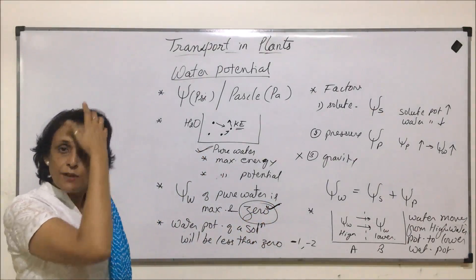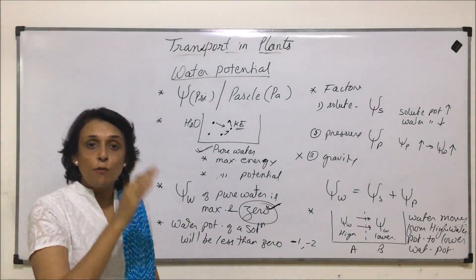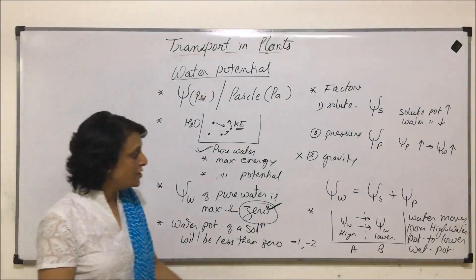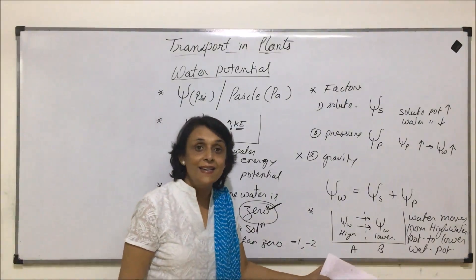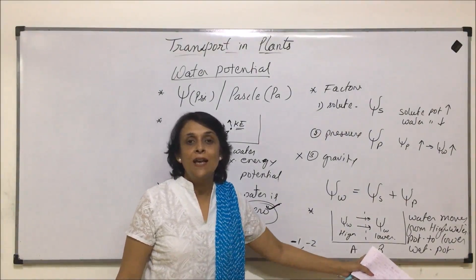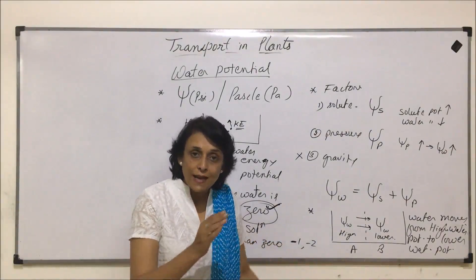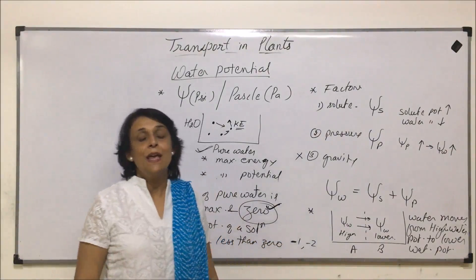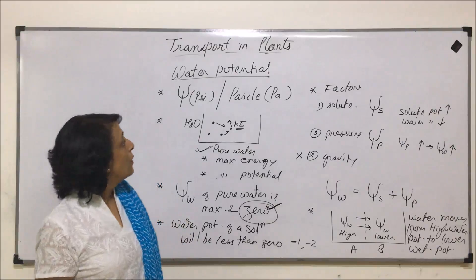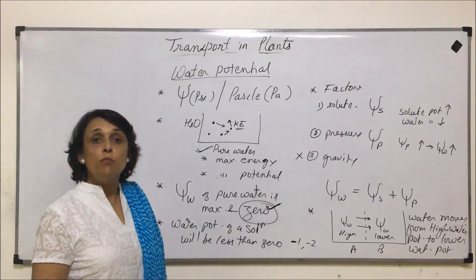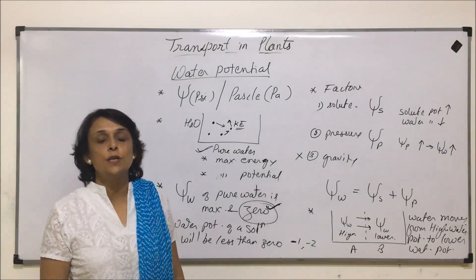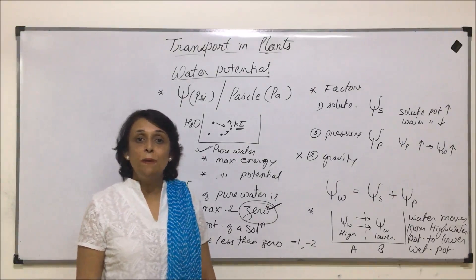This principle applies when we talk of transport from one cell to another. We need to see which cell has higher water potential and which one has lower, because that determines the direction of water movement. The next important term to discuss is DPD — diffusion pressure deficit.